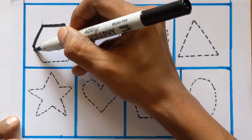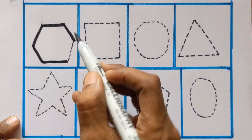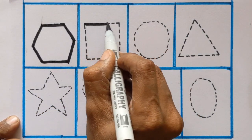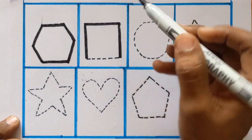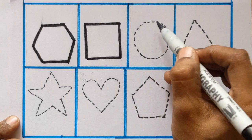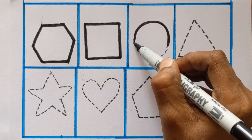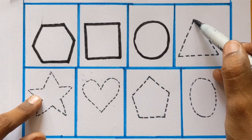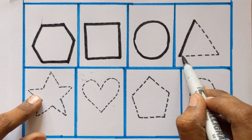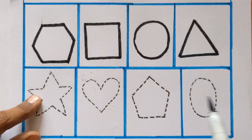Trace the shapes just by following the dots. Hexagon. Square. Circle. Triangle.